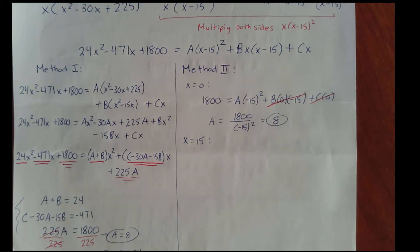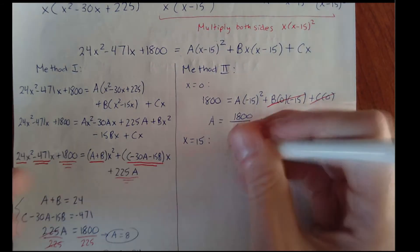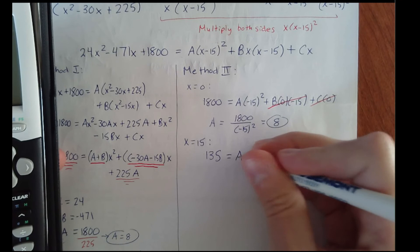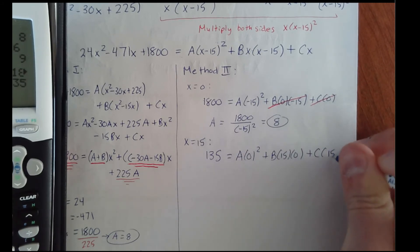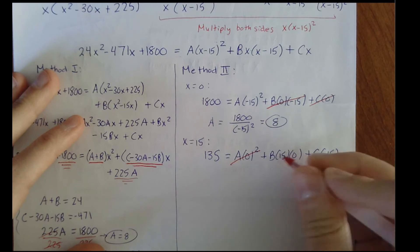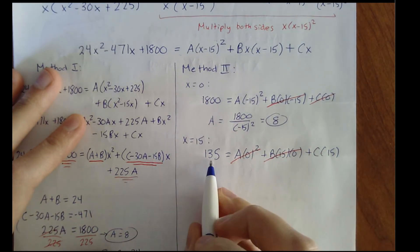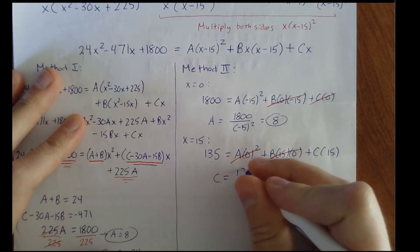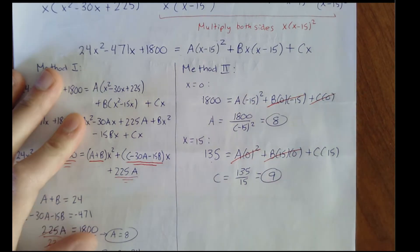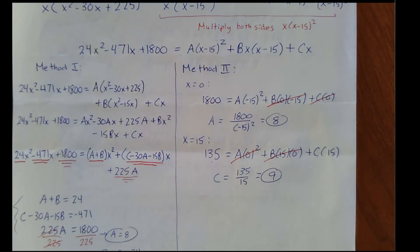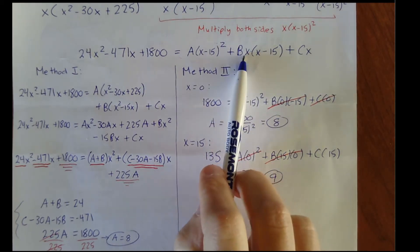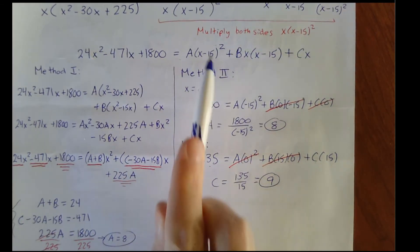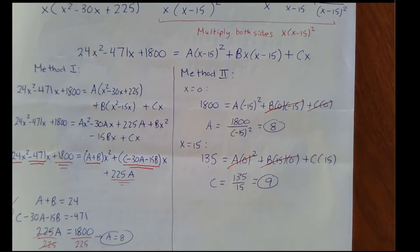To solve for C, plug in x equals 15, which cancels A and B. On the left side: 24 times 15 squared minus 471 times 15 plus 1800 equals 135. On the right, the A and B terms go to zero, leaving C times 15. So 135 equals 15c, meaning C equals 9. We plugged in 0 to cancel B and C (they share the factor x), and plugged in 15 to cancel A and B (they share the factor x minus 15).